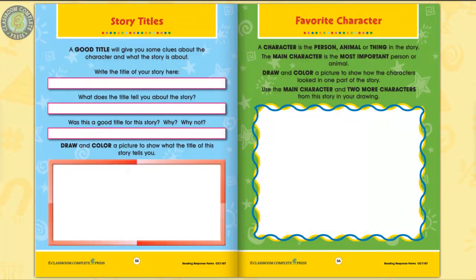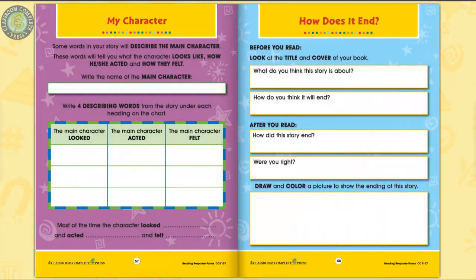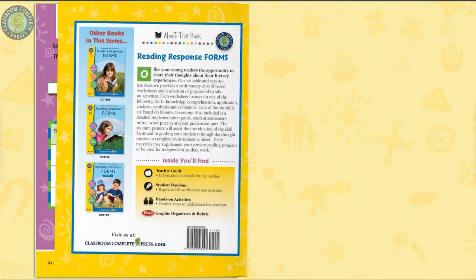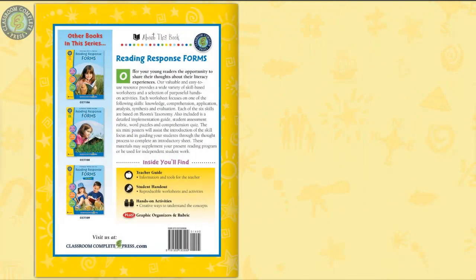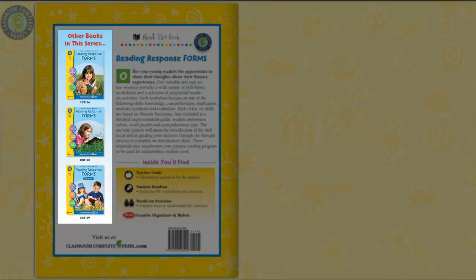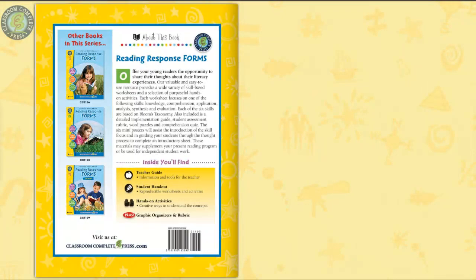Six color graphic organizers complete the resource. Find words from the novel that describe the main character based on how they look, act, and feel. Reading Response Forms for grades 3 to 4 is just one resource of a three-part series on reading response forms.